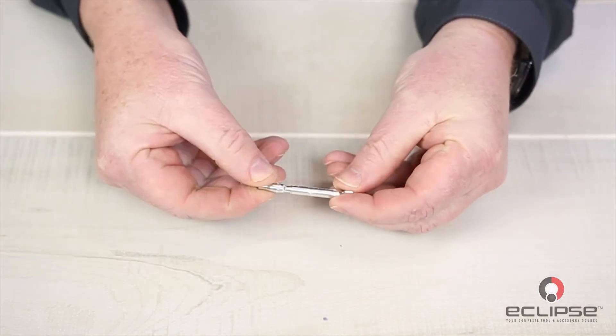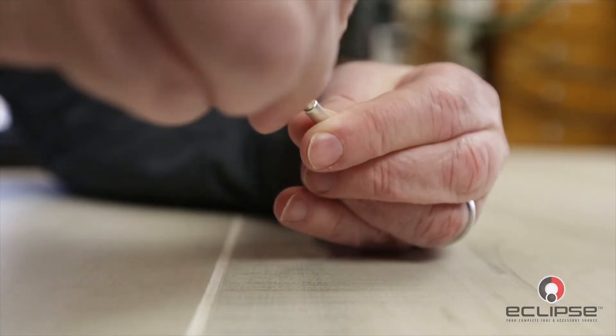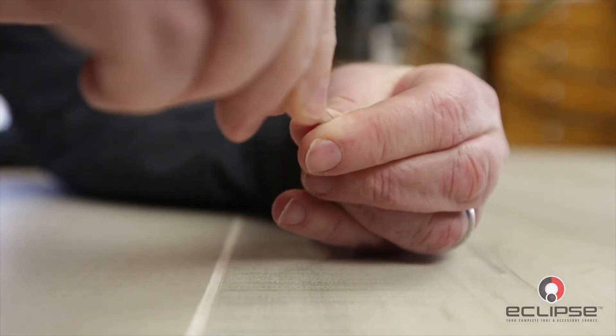Now, we'll crimp the female pin onto the cable. Just remember, the female is the positive and the male is the negative, which is indicated on the connectors.